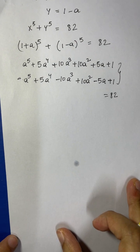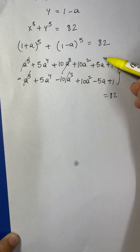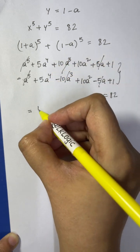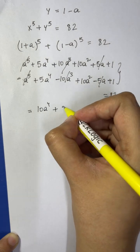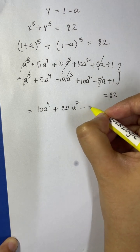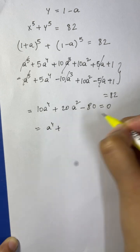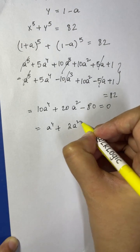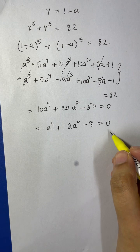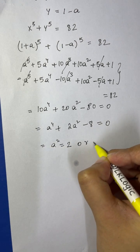Solving: a to the 5 minus a to the 5 cancels, and 10a cubed minus 10a cubed and 5a minus 5a also cancel. We're left with 10a to the 4 plus 20a squared plus 2 equals 82, giving 10a to the 4 plus 20a squared minus 80 equals 0. Taking out 10: a to the 4 plus 2a squared minus 8 equals 0. Solving this, a squared equals 2 or a squared equals negative 4.